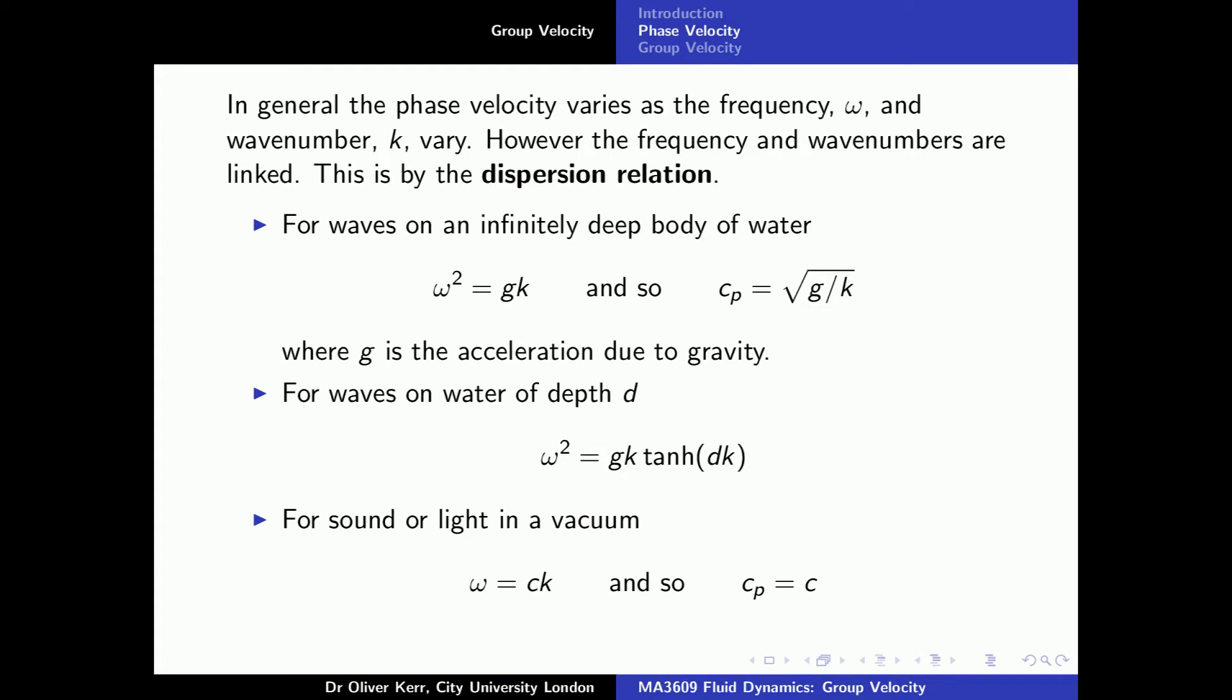For an infinitely deep body of water, this dispersion relation is given by omega squared equals k times g, where g is the acceleration due to gravity. Other waves have different dispersion relations. For example, both sound waves and light waves in a vacuum have the dispersion relation omega equals c times k, where c is the speed of sound or the speed of light respectively.